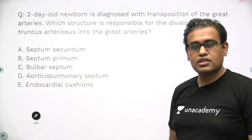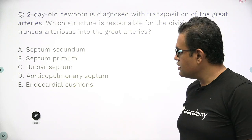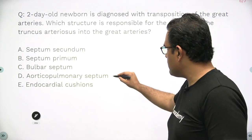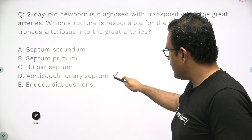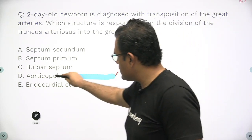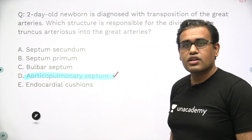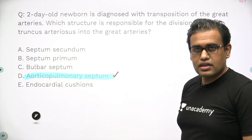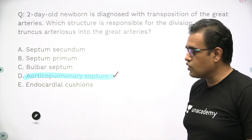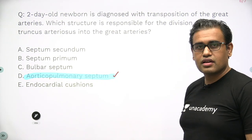The answer for this question is option D — the aorticopulmonary septum. The aorticopulmonary septum is the septum which divides the truncus arteriosus into two parts: the aorta and the pulmonary trunk.